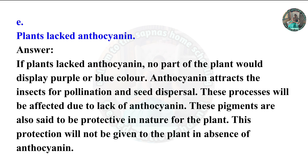Part E: If plants lacked anthocyanin. If plants lacked anthocyanin, no part of the plant would display purple or blue color. Anthocyanin attracts insects for pollination and seed dispersal; these processes would be affected. These pigments are also said to be protective in nature for the plant, and this protection would not be given to the plant in the absence of anthocyanin.